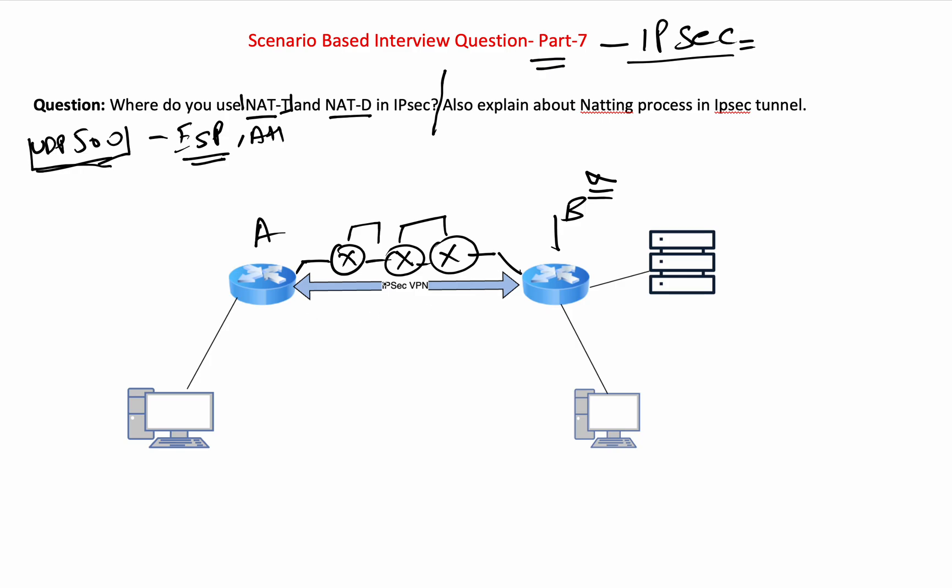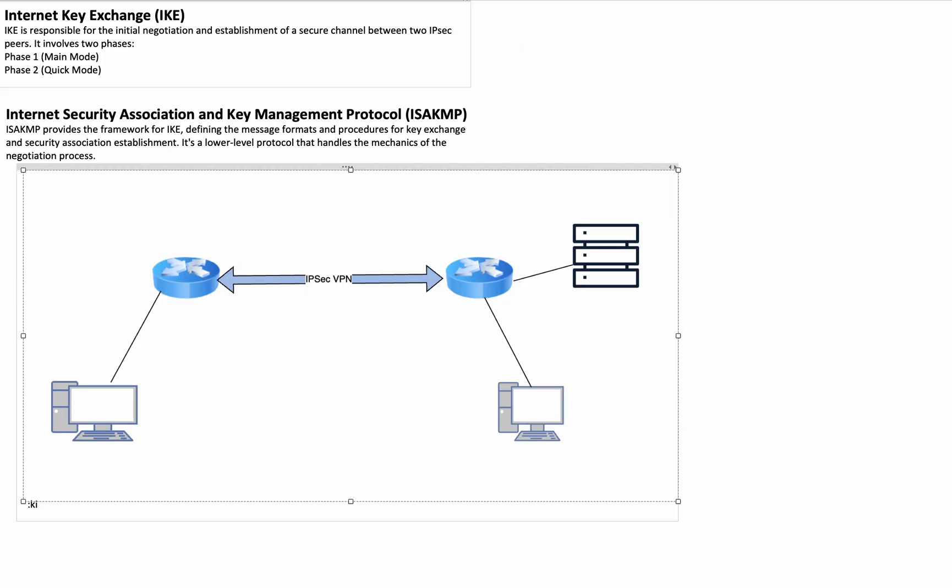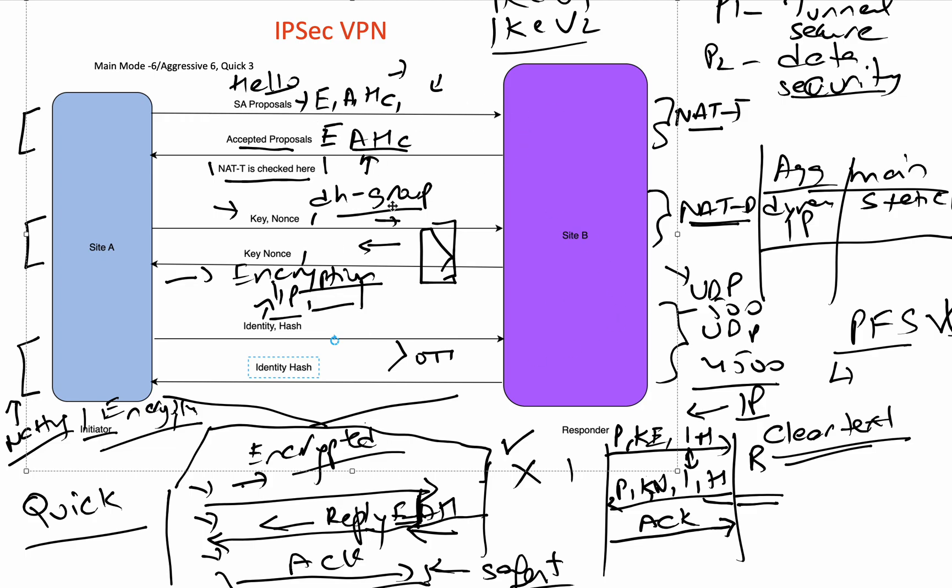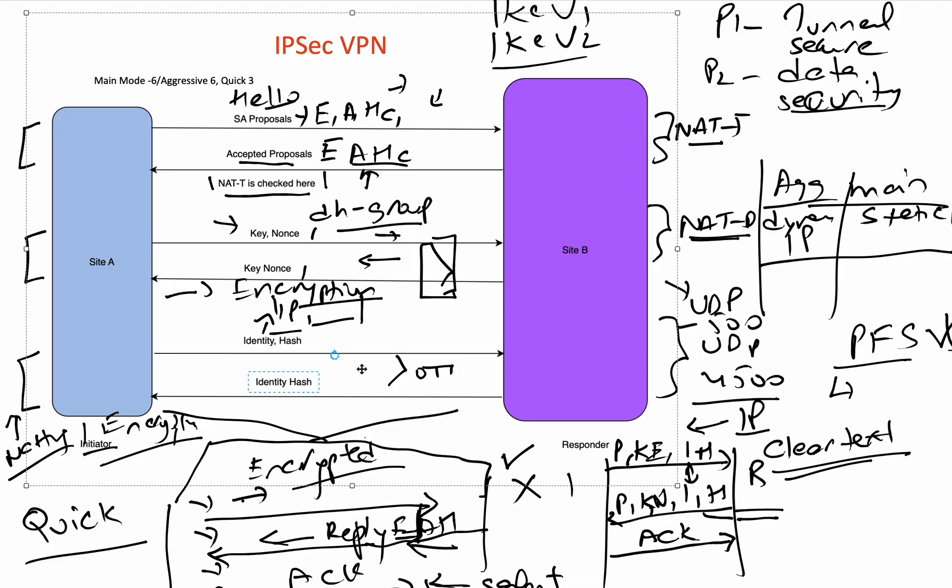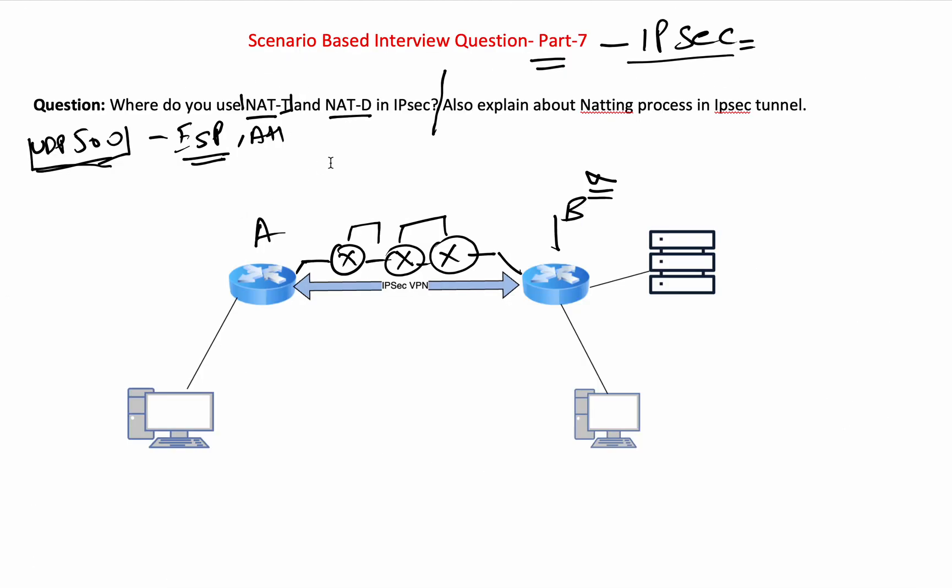So what happens in an IPsec tunnel? I will just give you an overview. This is your basic IPsec tunnel. I think this was from a previous video. So we have this IPsec tunnel from site A to site B. In this case, there are main modes and quick mode. There is one main mode, there is one quick mode.